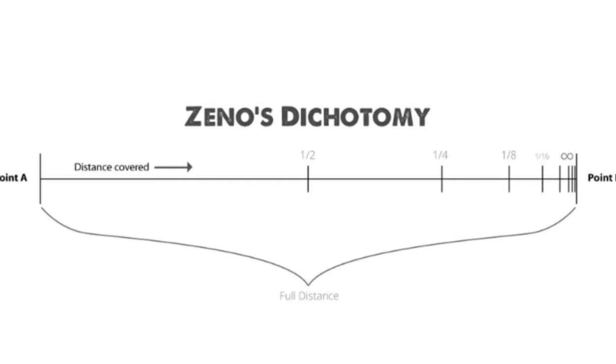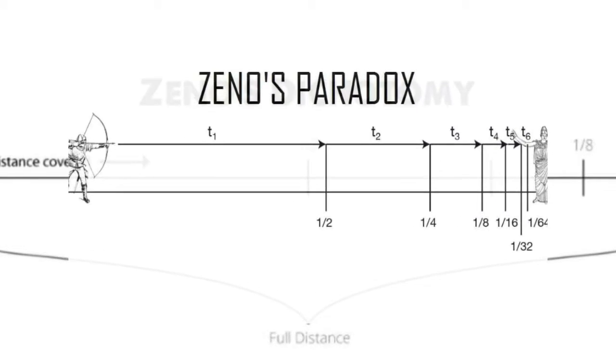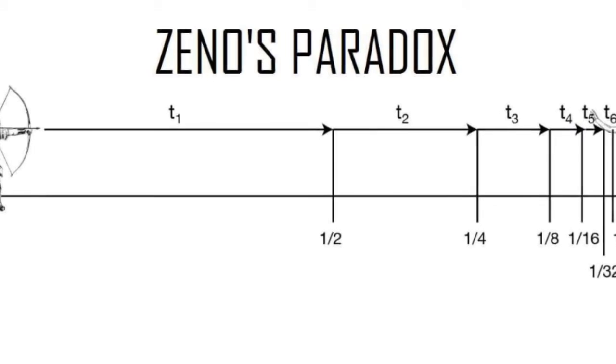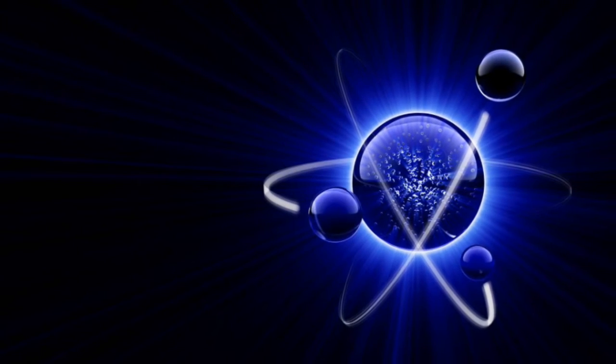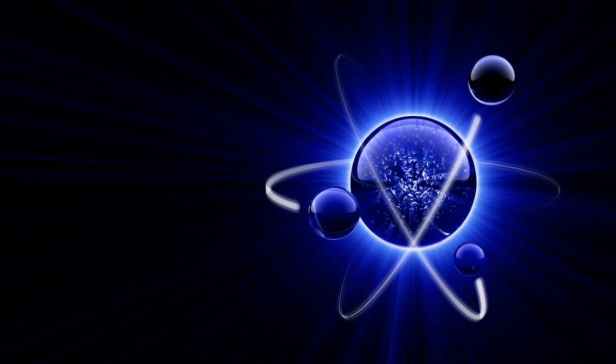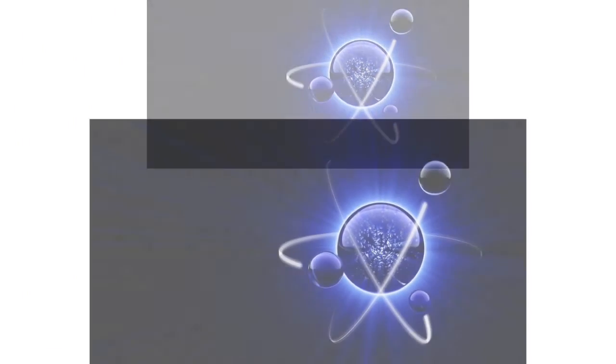But since we know movement between two points is possible, it seems the only logical conclusion is that space-time is not infinitely divisible. You cannot infinitely divide sections of space-time. At a certain point, you will indeed, however strange, reach indivisible units of space-time, units you can't divide with another halfway point.